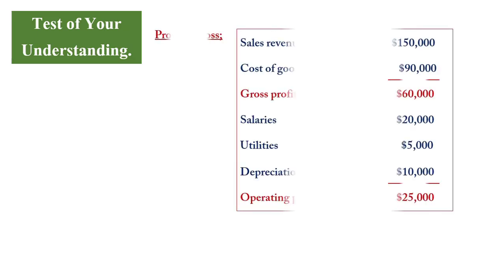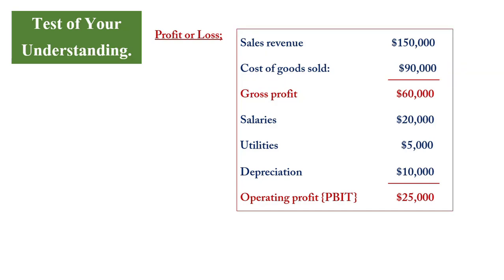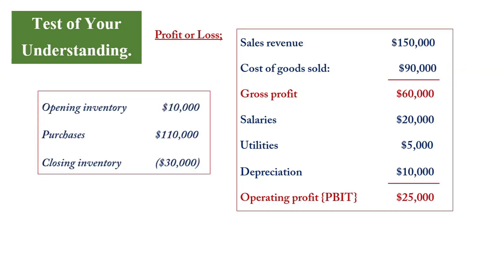Now let's test our understanding. Looking at the profit and loss: revenue and cost of sales give a gross profit of $60,000. After salaries, utilities, and depreciation, the operating profit is $25,000. We will need the revenue and cost of sales figures. The cost of sales breakdown is: opening inventory $10,000, purchases $110,000, and closing inventory $30,000.